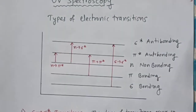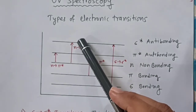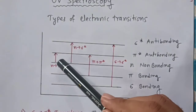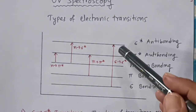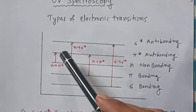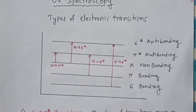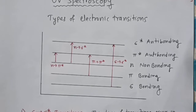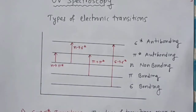The third type of electronic transition is n to sigma star — from the non-bonding molecular orbital to the sigma star anti-bonding molecular orbital — and the fourth type is n to pi star. The energy gap for n to pi star is very very small compared with sigma to sigma star, which is a very high energy transition. The n to pi star transition requires very small energy and therefore the wavelength required will be high. So these four transitions are allowed in ultraviolet spectroscopy: sigma to sigma star, pi to pi star, n to sigma star, and n to pi star. The highest energy transition is sigma to sigma star and the lowest energy transition is n to pi star.